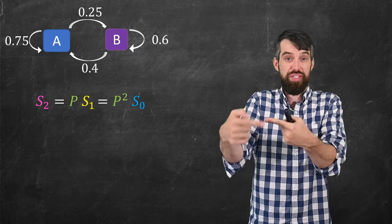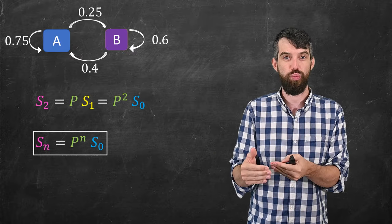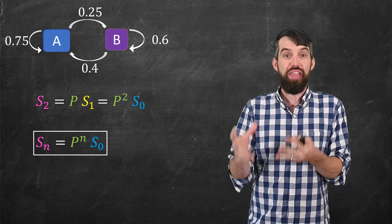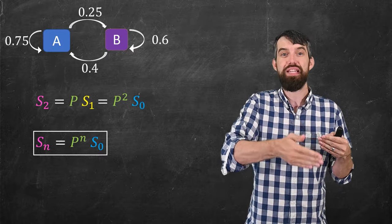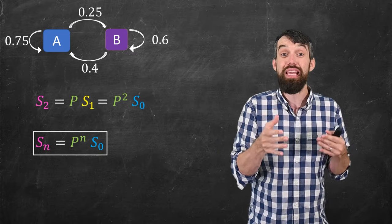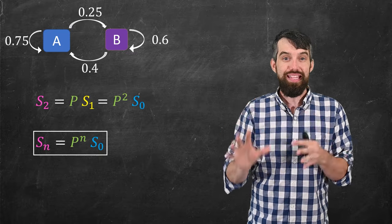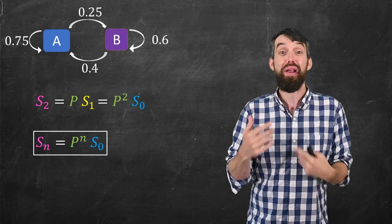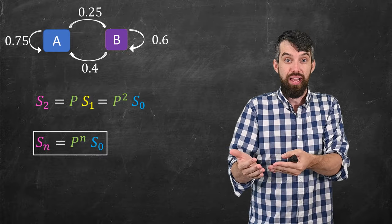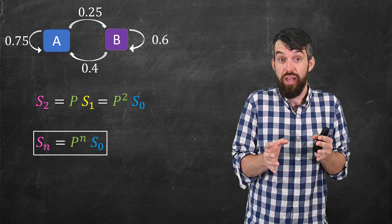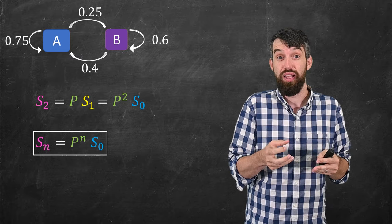And this is my final answer for how I can do manipulations in Markov chains. The nth state is just this transition matrix multiplied n times to the initial state.